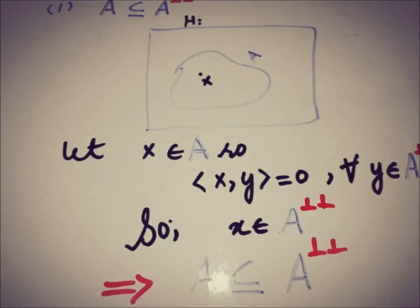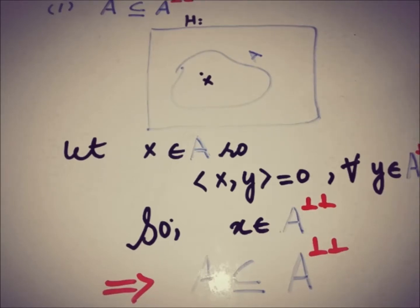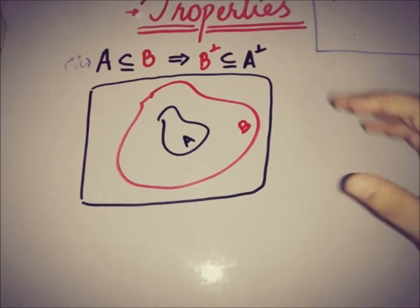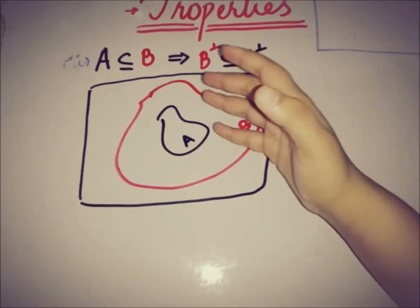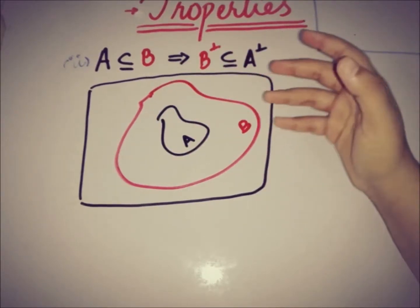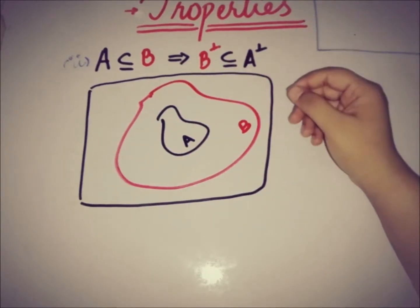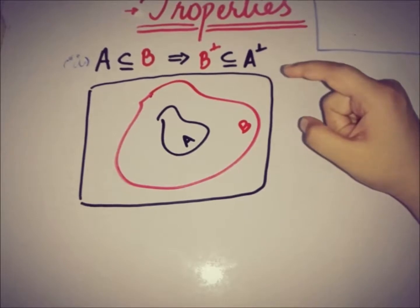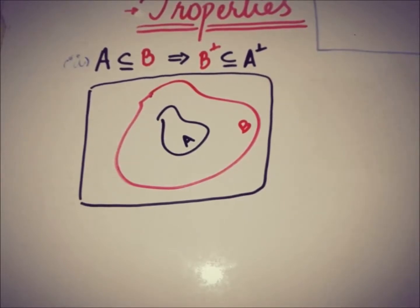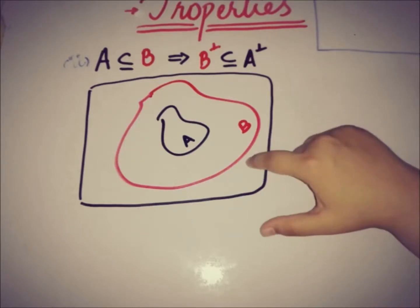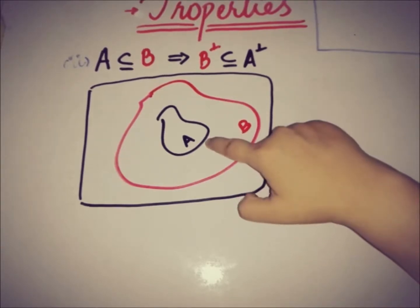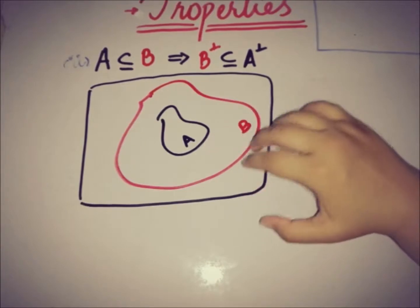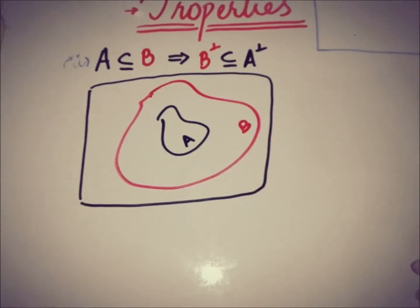The second property of annihilator states that if A is a subset of B, where A and B are subsets of the Hilbert space, then B annihilator is a subset of A annihilator. We have H as a Hilbert space, B a subset of H, A a subset of H, and B is the superset of A.